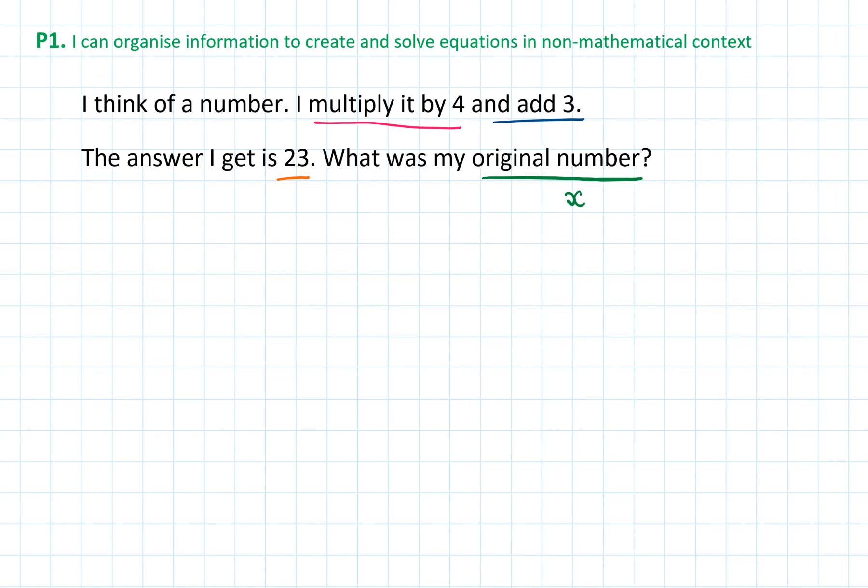We can denote this original number with x to help us form an equation. We can form an equation as such. We start with x. When we multiply this x by 4, we'll get 4x.